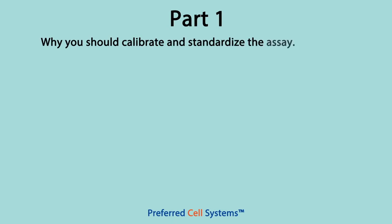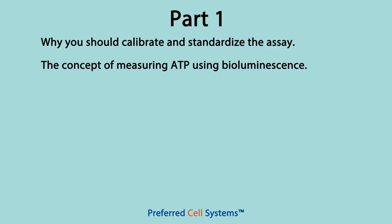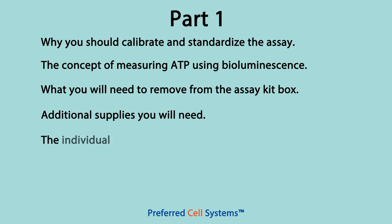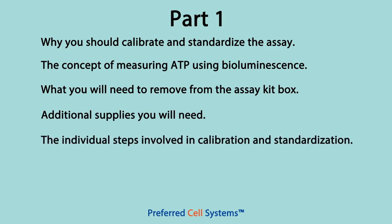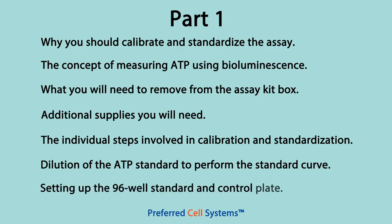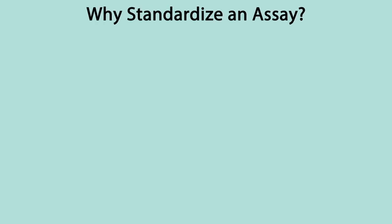In part one of this tutorial, we shall first describe why you should calibrate and standardize the assay, the concept of measuring ATP using bioluminescence, what you'll need to remove from the assay kit box, the additional supplies that you'll need, and the steps involved in calibration and standardization. Then we'll go on with the practical aspects, showing how the ATP standard is diluted to perform the standard curve, and then setting up the standard curve and control plate.